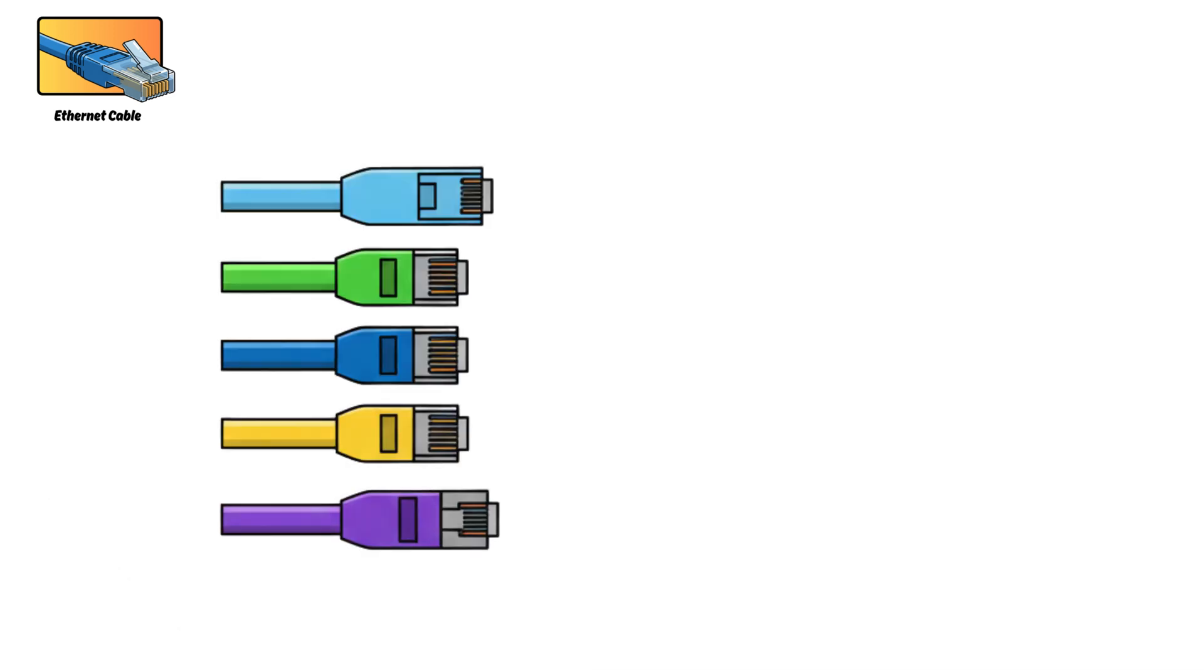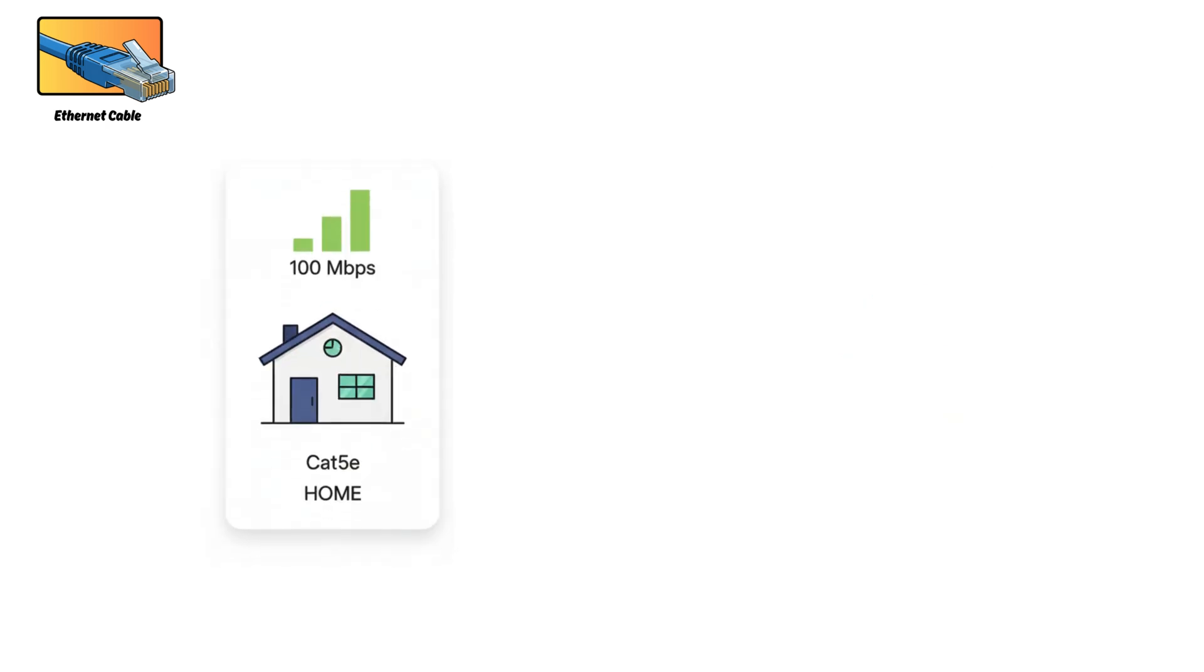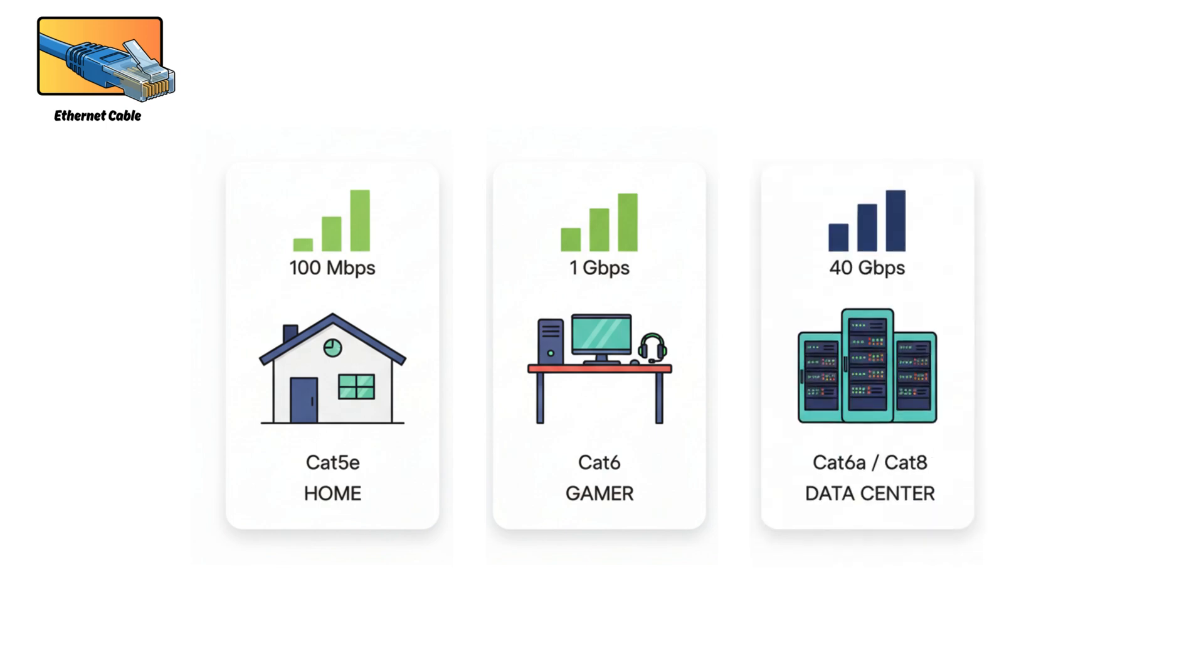Think of categories like road upgrades. Higher numbers equals more bandwidth, more speed, and less signal noise. For beginners, CAT5E is perfect for normal internet use. CAT6 is recommended if you want gigabit speeds with less interference, while CAT6A and CAT8 are used in commercial buildings and data centers.